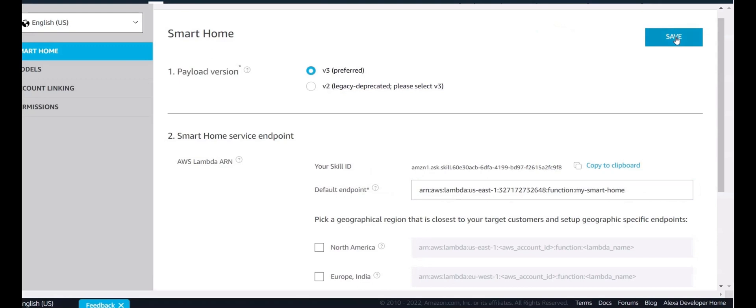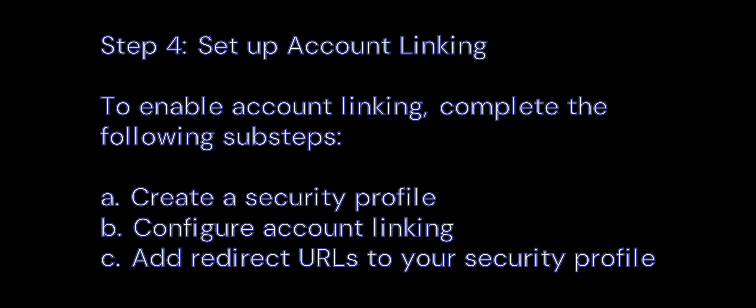Now that you've configured the endpoint for your skill, you're ready to set up account linking. Step 4: Set up account linking. To enable account linking, complete the following sub-steps: A, Create a security profile. B, Configure account linking. C, Add redirect URLs to your security profile.